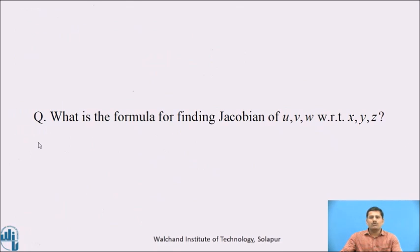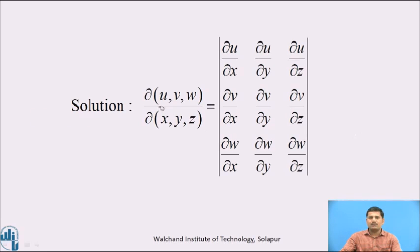Pause this video and write down the formula for finding the Jacobian of uv with respect to xyz. The Jacobian of uvw with respect to xyz is defined by a 3×3 determinant in which the first row contains partial derivatives of u with respect to xyz, the second row contains partial derivatives of v with respect to xyz, and the third row contains partial derivatives of w with respect to xyz.